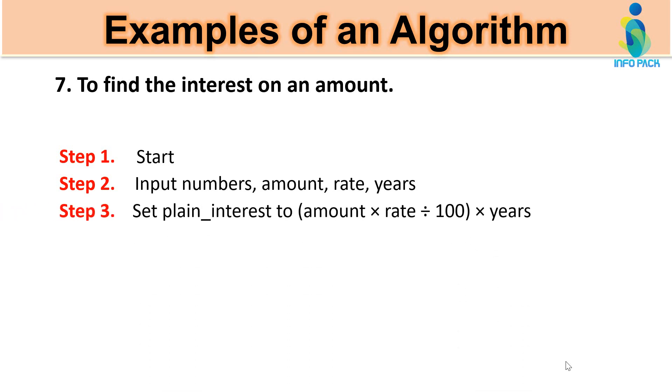In step 3 set plain interest to amount multiply by rate and divide it by 100. And after this multiply by years. In step 4 output plain interest. And in step 5 end.